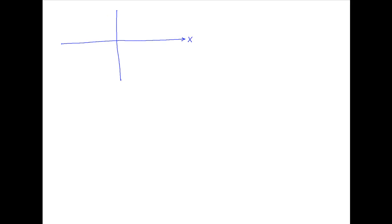We are given the ellipse x² / a² + y² / b² = 1. Let's start by plotting this ellipse on the Cartesian plane.